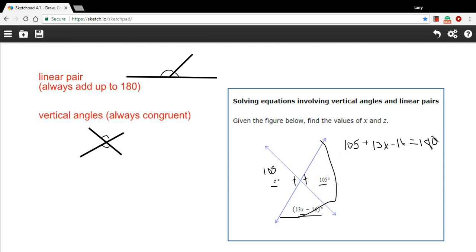There is my equation. I just need to solve that for x. Let's combine like terms. I've got 105 and negative 16. That's 89, so 13x plus 89 equals 180.